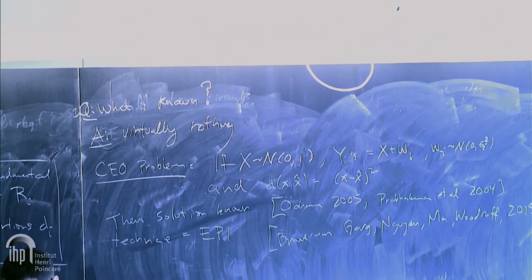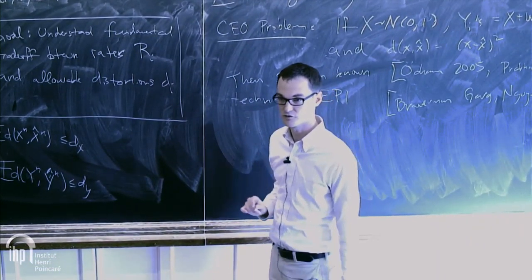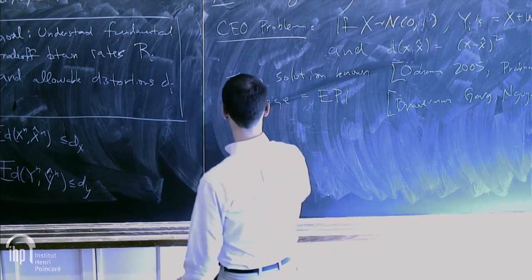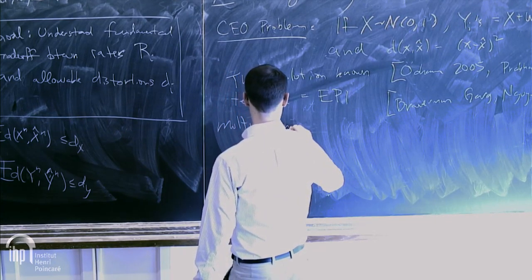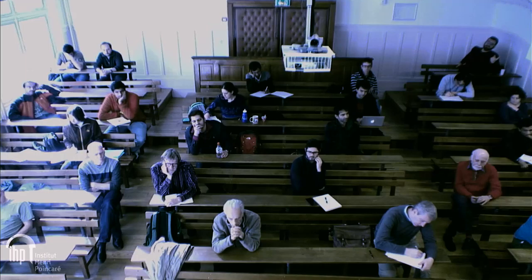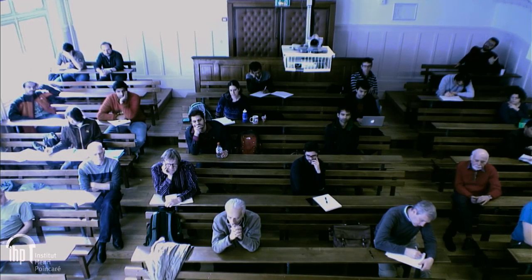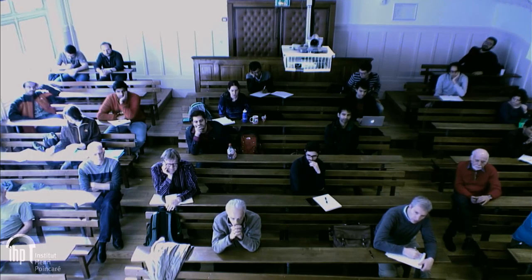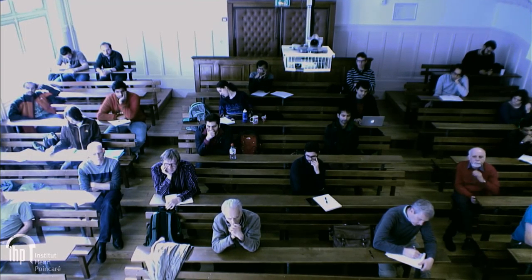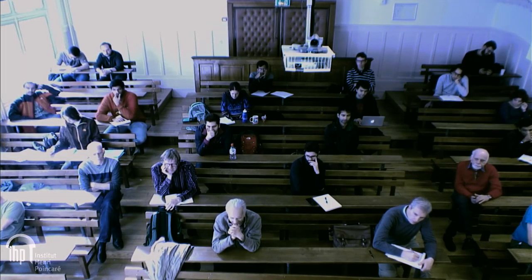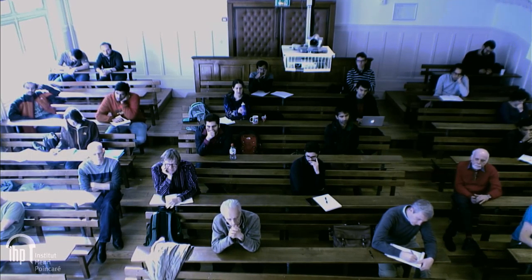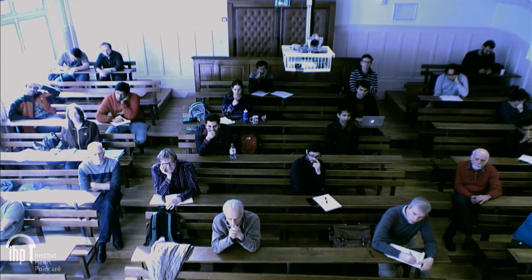When we say the solution is known, we mean the complete rate-distortion region — the explicit trade-off between rates and achievable distortions. For the multi-terminal problem with quadratic loss and X, Y jointly Gaussian, it's completely solved by Wagner et al. 2008, following a series of about three papers.